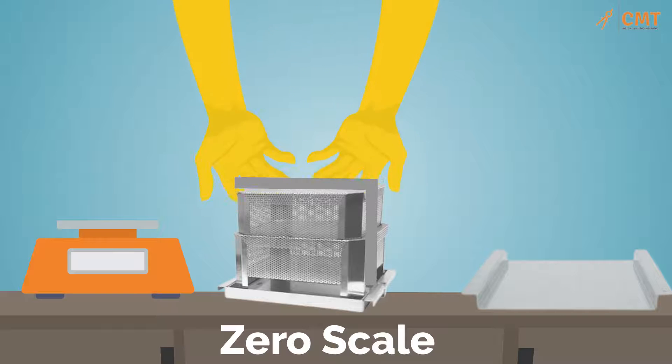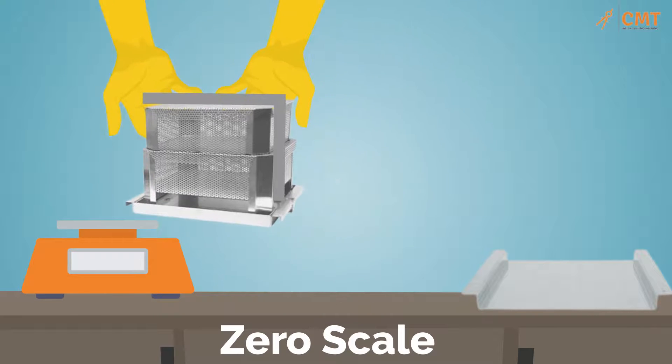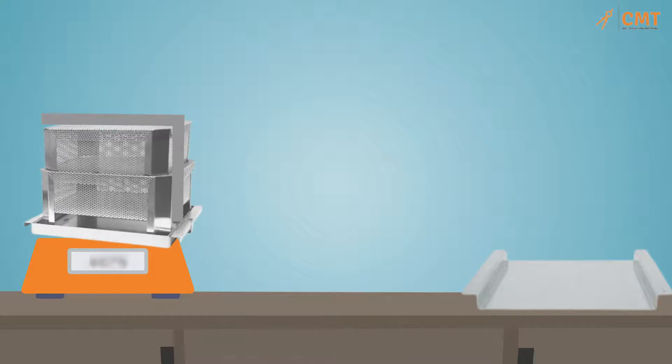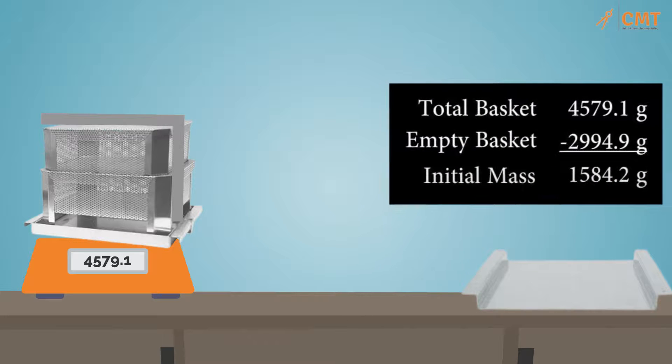Zero the scale and place the basket assembly on the scale platform. Record the total mass of the basket assembly and sample. Determine the initial mass of the sample by subtracting the mass of the empty basket assembly from the total mass. Round the initial mass of the sample to the nearest one gram.